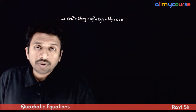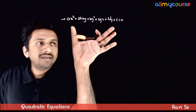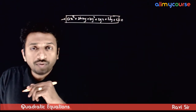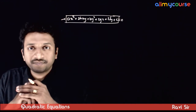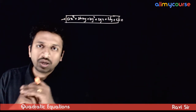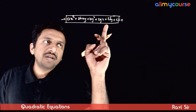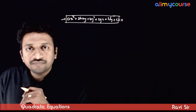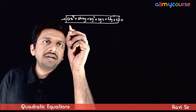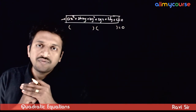Welcome students. In this topic, let us look at the condition which ensures that you can divide a quadratic expression in two variables into two linear factors. Assume that you have a general quadratic equation in two variables x and y: ax² + 2hxy + by² + 2gx + 2fy + c = 0. The question is: what is the condition which ensures that this expression can be divided into two linear factors?